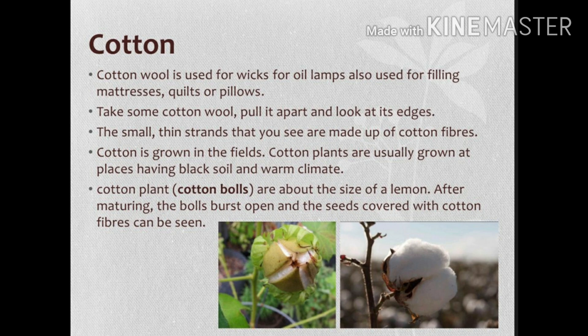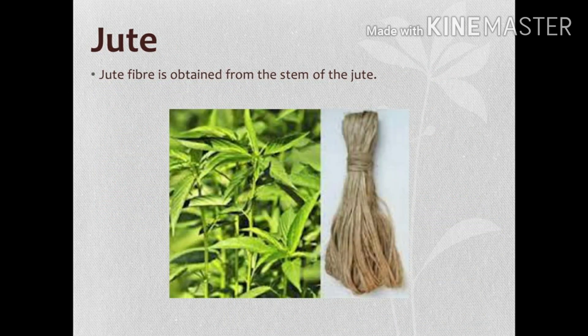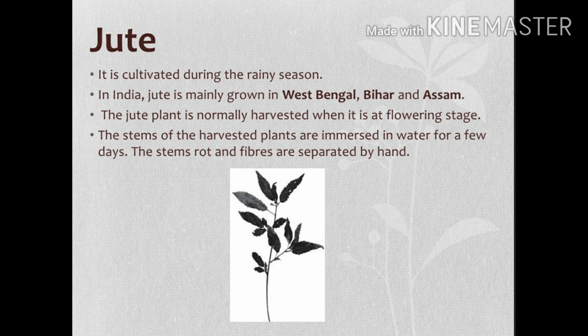Cotton is one of the most comfortable fabrics to be worn in all climatic conditions. Now see jute. Jute is one of the cheapest fibers used for making various products — and now for clothes also, it is blended with some other fiber. When it is at the flowering stage, it is cut and submerged in water. After 20 days it is removed and dried, and golden-colored long fibers are obtained.